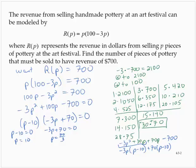Now p is a number of pieces, and 70 divided by 3 is 23.3 bar. You can't sell a third of a piece.